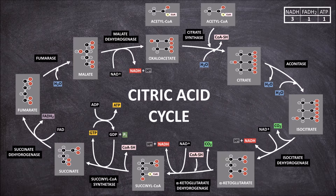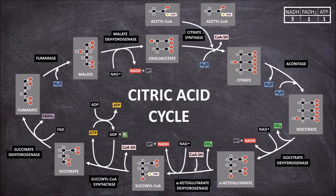So far we have had one acetyl-CoA go through the citric acid cycle, but we have two acetyl-CoA molecules per glucose molecule, so this cycle goes through twice. This doubles our net total for the citric acid cycle, giving us a final net total of six NADH, two FADH2, and two ATP.